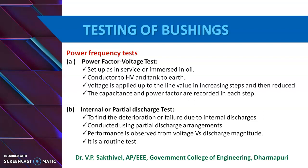In the first power factor voltage test, the bushing is set up as in service or immersed in oil. It is connected such that the line conductor goes to the high voltage side and the tank or earth portion goes to the detector side of the high voltage shearing bridge. The voltage is applied up to line value in increasing steps and then reduced. The capacitance and power factor are recorded at each step, and a characteristic of power factor or tan delta versus applied voltage is drawn. This is not usually a routine test but may sometimes be conducted on a percentage basis.